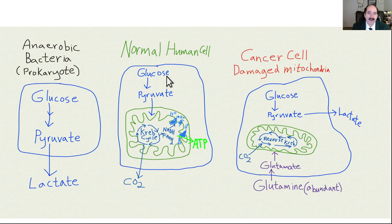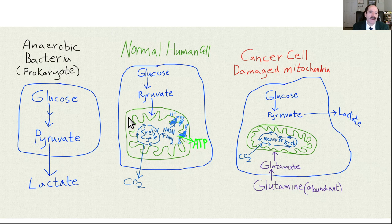Here's a picture of a normal human cell: it takes glucose through glycolysis to make pyruvate, which goes into the mitochondrial matrix, runs through the Krebs cycle, and then oxidative phosphorylation along the mitochondria membrane makes 30 to 38 ATP. In anaerobic bacteria, glucose goes through glycolysis to pyruvate, which gets converted to lactate and expelled from the cell.